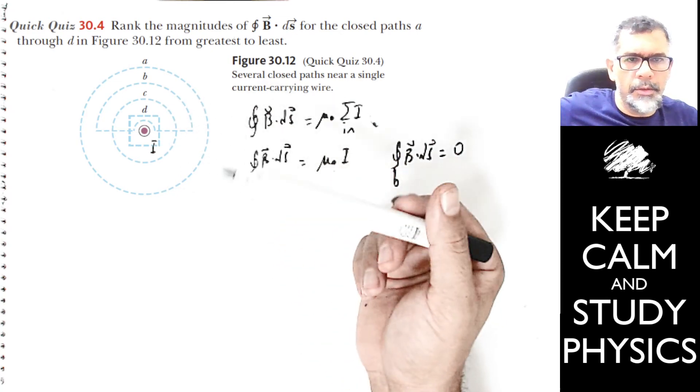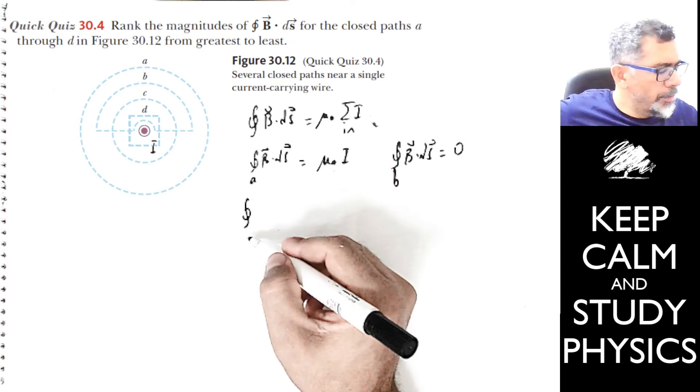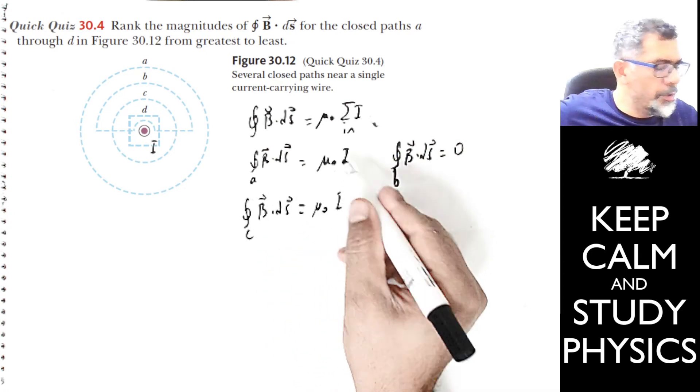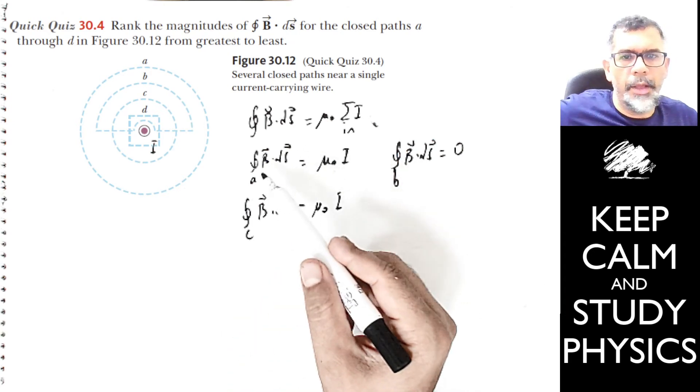So for C, B·dS is just mu₀I, which equals the result for A.